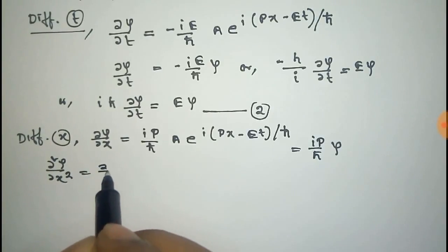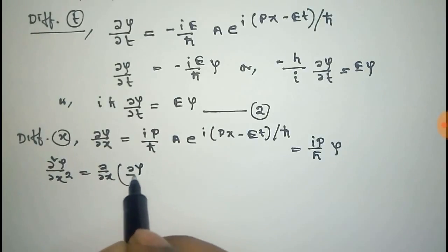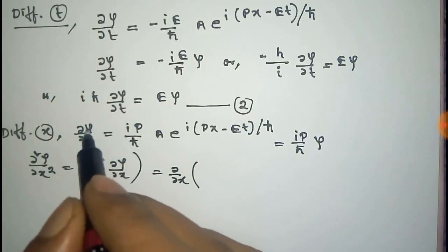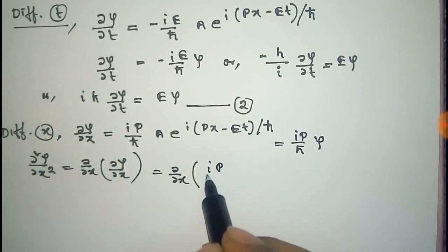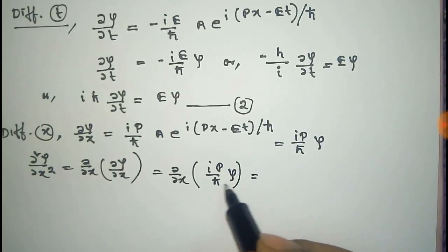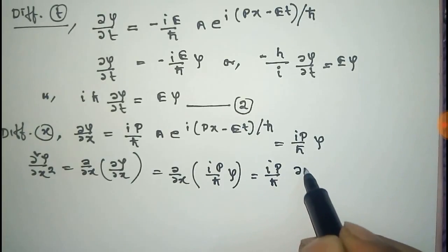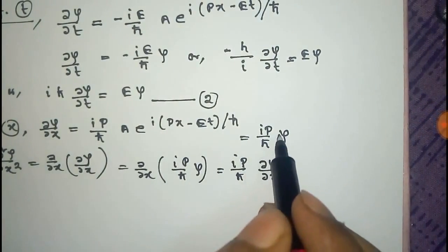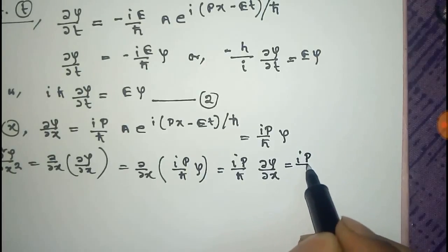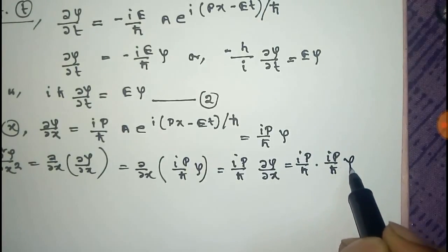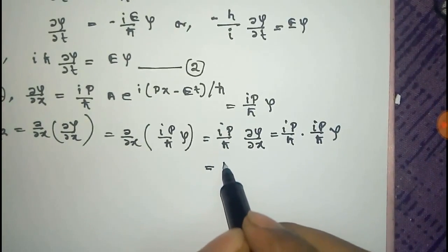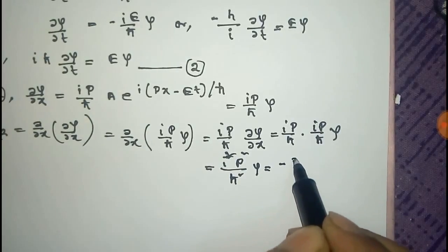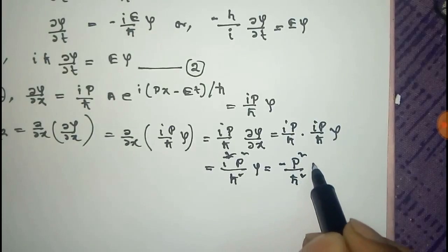The second derivative ∂²ψ/∂x² equals ∂/∂x of (ip/ℏ)·ψ, which is (ip/ℏ) times (ip/ℏ)·ψ again. This equals i²p²/ℏ²·ψ, and since i² = −1, we get −p²/ℏ²·ψ.